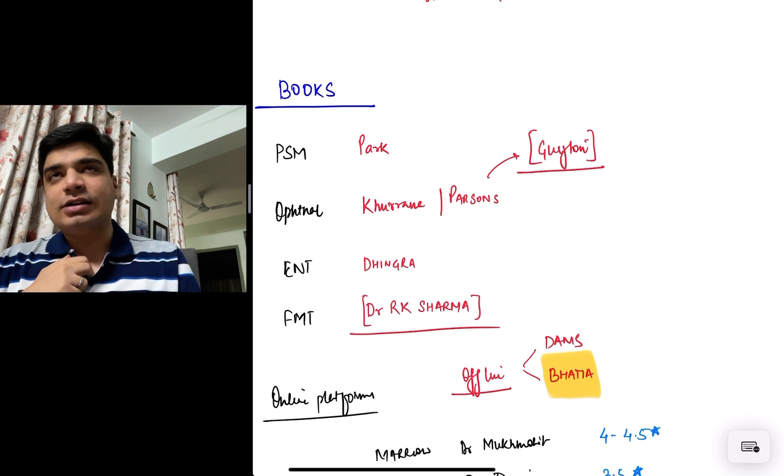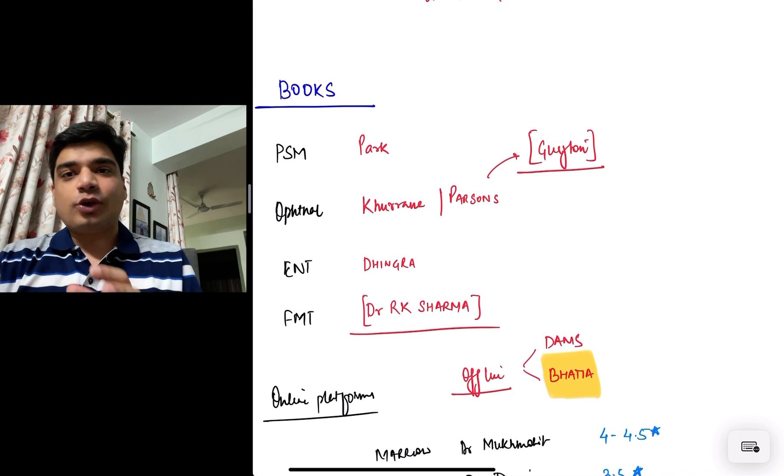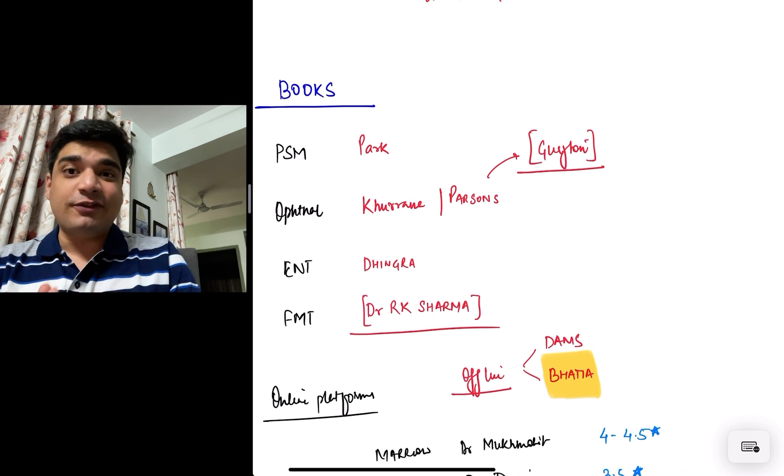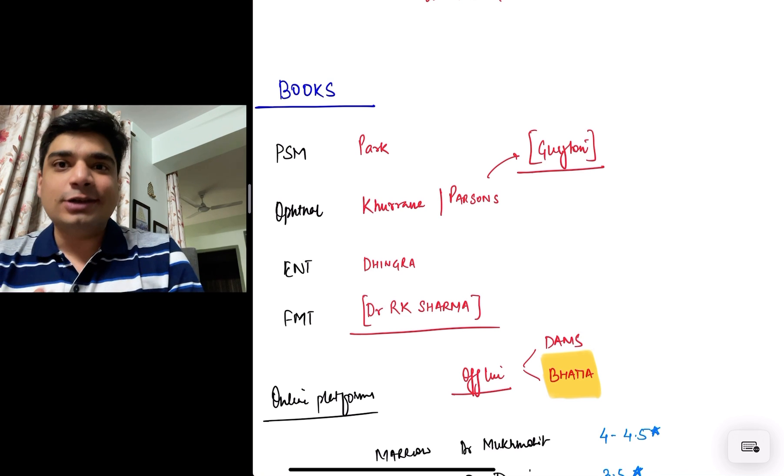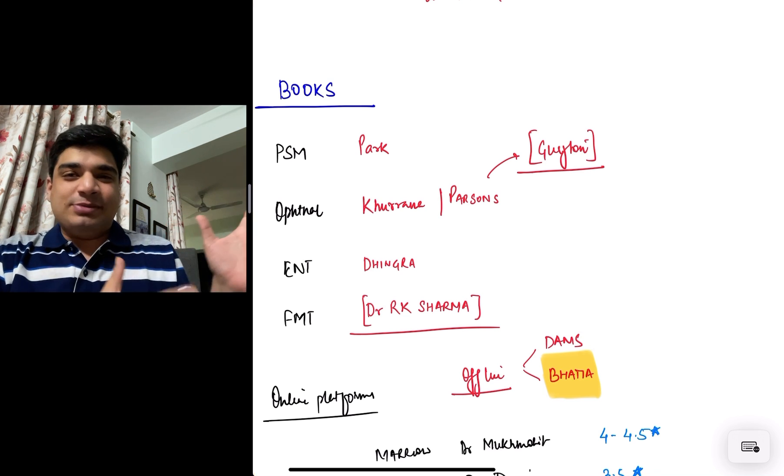My advice would be to read Parsons for better understanding and then go to Khurana from your exam point of view. See your past university papers and see how you can write the answers from Khurana, but try to read Parsons. As far as ENT is concerned, Dhingrai is definitely a really good book.